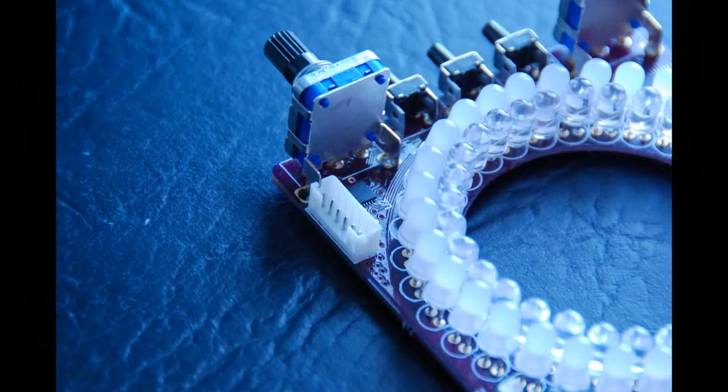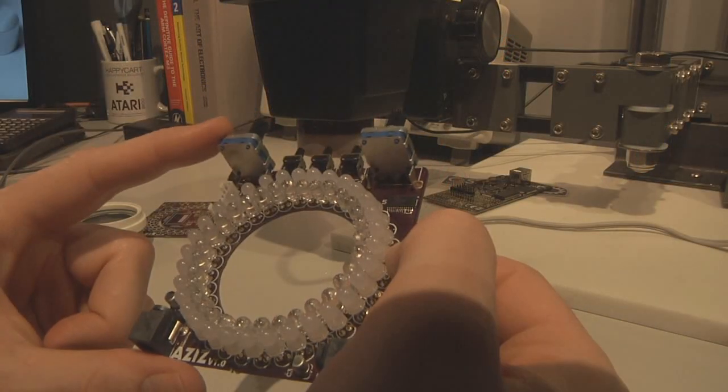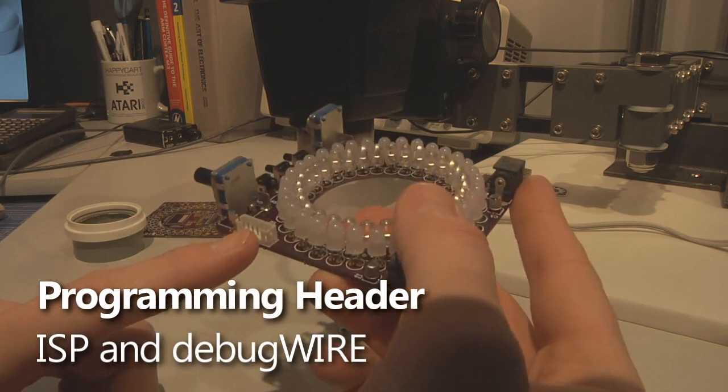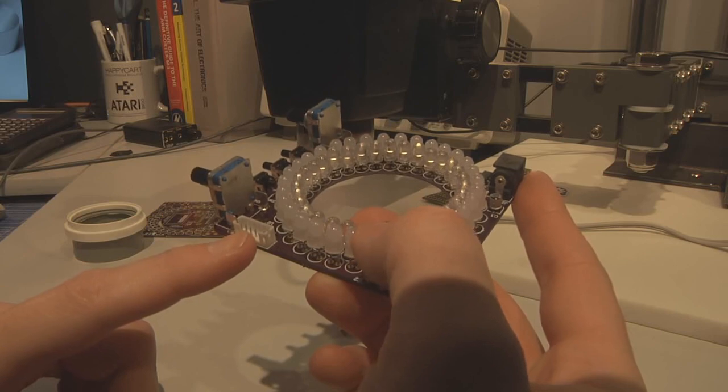That lives over here on the left-hand side of the board, behind this white header and this encoder knob. Speaking of that white header, that is actually the in-circuit program and debug wire port, which allows programming and debugging of the microcontroller code.